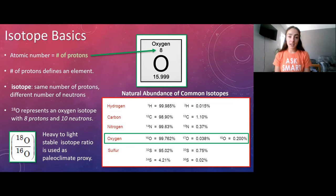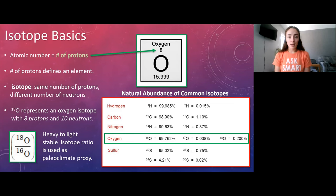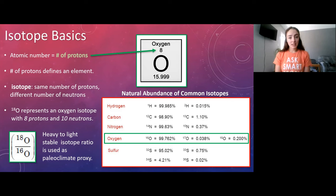But if you have something like uranium-238 and add or take away a couple of neutrons, it doesn't change physically in the same way. That's why we focus on light stable isotopes — the physical differences in their masses are significant enough to cause them to behave differently in the environment, as we'll see with oxygen.